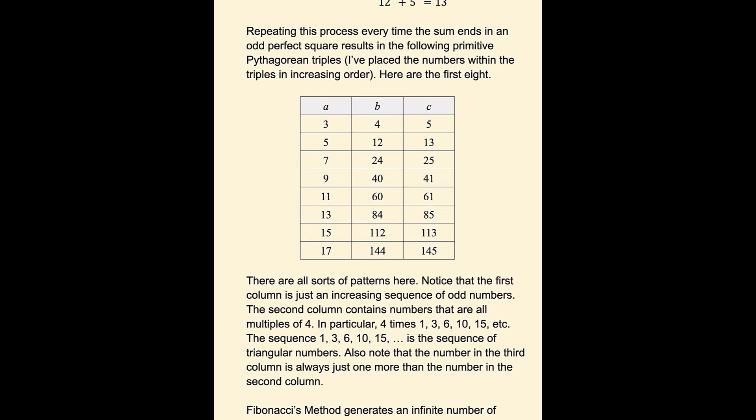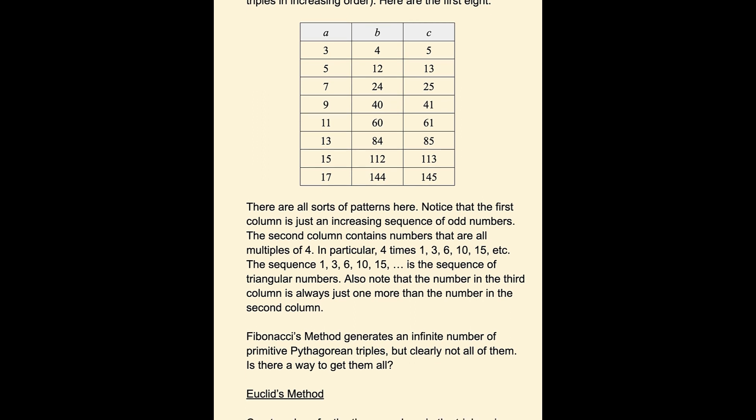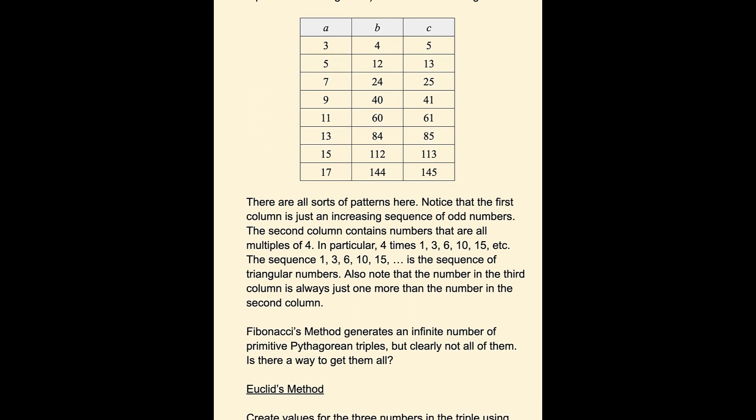In this little table, there are all sorts of patterns. Notice that the first column is just an increasing sequence of odd numbers, starting with 3. 3, 5, 7, 9, 11, etc.